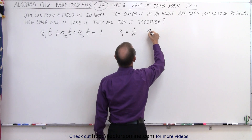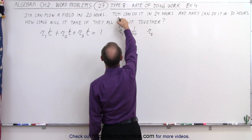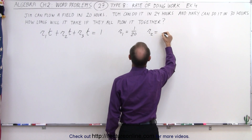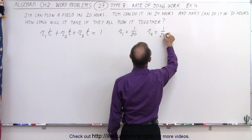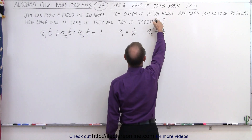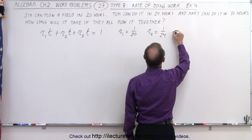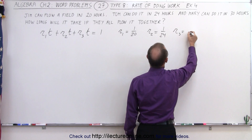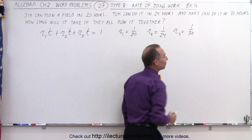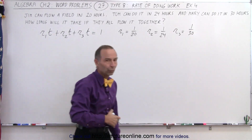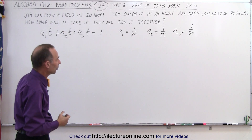The rate for the second person, Tom, will be equal to 1/24th of a field every hour, because it takes 24 hours to do it by himself. And then the rate of Mary, the third person, will be equal to 1/30th of a field in every hour. So the rate is the amount of the field you can work in every one hour.